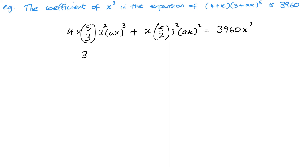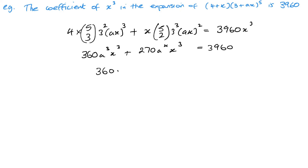This gives me 360a³ x cubed plus 270a² x cubed, and that of course is equal to 3,960. Which then means I get 360a³ plus 270a² equals 3,960.